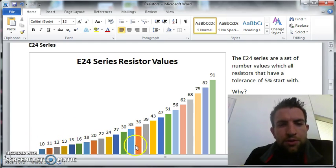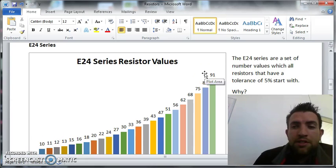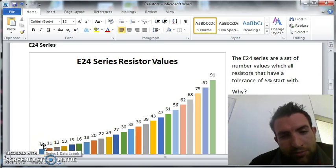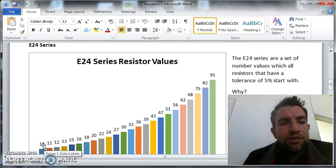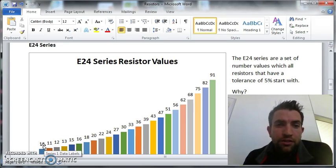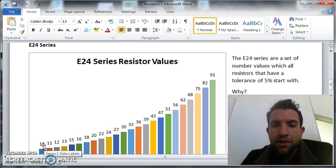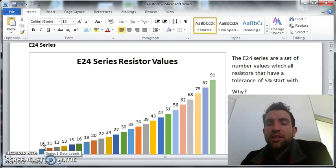The reason these all have a five percent tolerance is so they overlap each other, covering every single value we could possibly want. If we look at 100 ohms - five percent of 100 is 5, so the lowest it could be is 95 and the highest is 105.